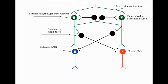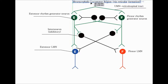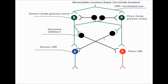If you follow the source of that signal, it originates from the mesencephalic locomotor region, and travels via the reticular formation. These tonic descending inputs are required to activate the CPG module in the spinal cord.